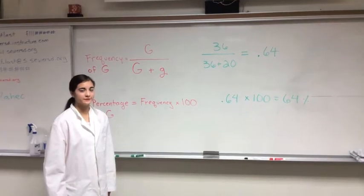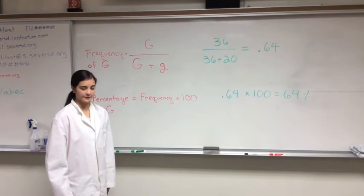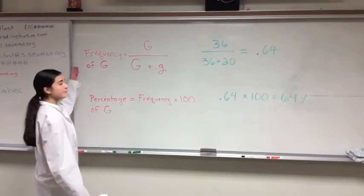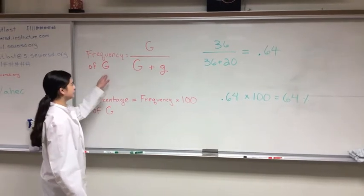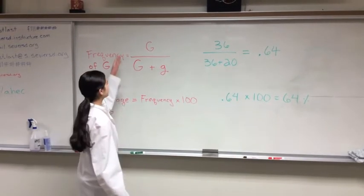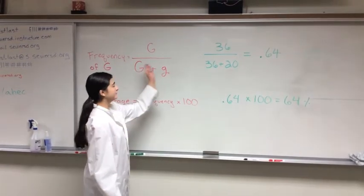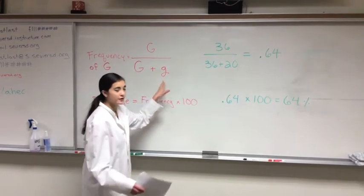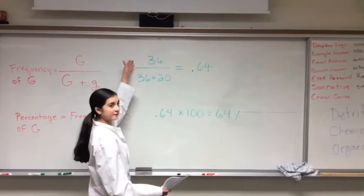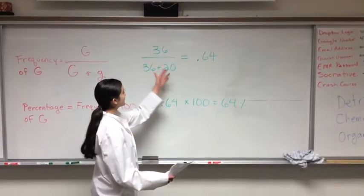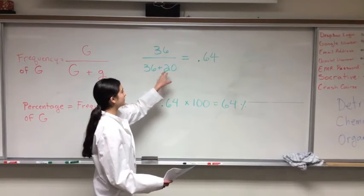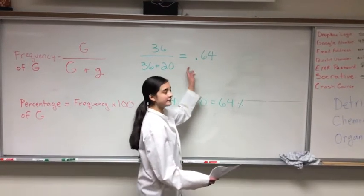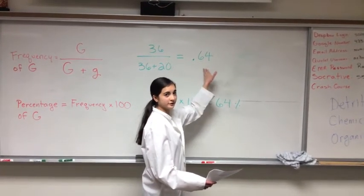Now we're going to finish your table for the first generation and figure out the percentage and frequency. To find the frequency of the big G allele, take your big G number and divide it by the big G number plus the little g number. In our case, we had 36 big G alleles divided by 36 plus 20, which equals 0.64. Round to two decimal places.